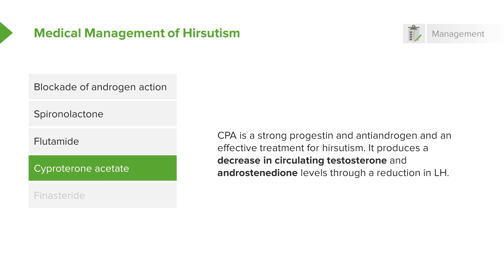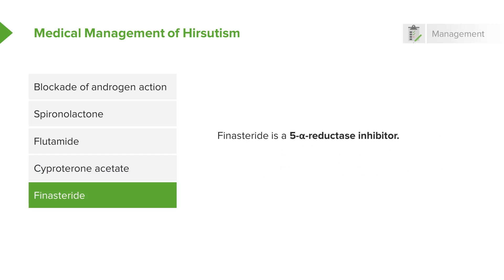In the US, we do not have access to CPA; however, in other countries they do. This is a strong progestin and an antiandrogen that decreases circulating testosterone and androstenedione. Finally, there's finasteride, which is a 5-alpha-reductase inhibitor.